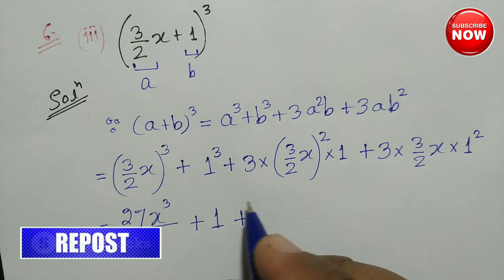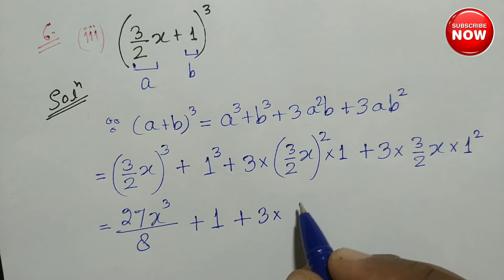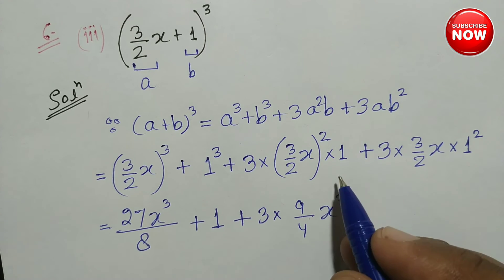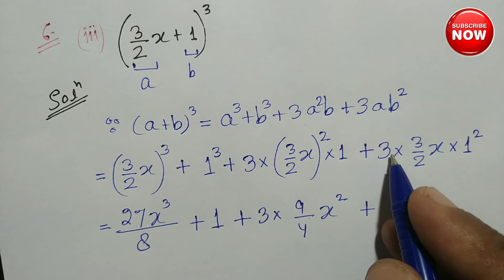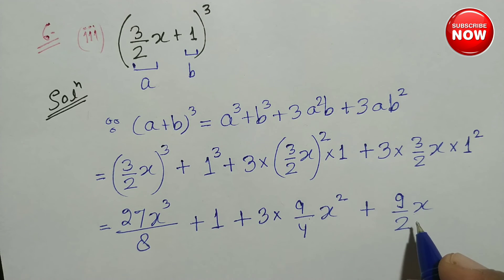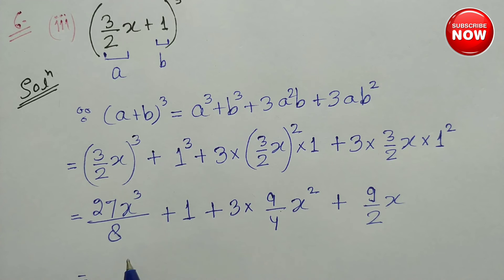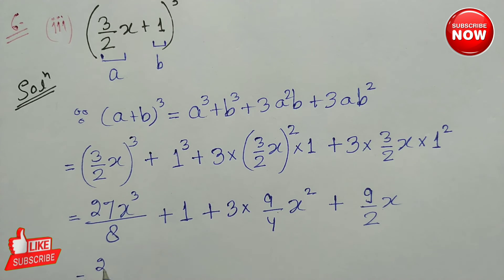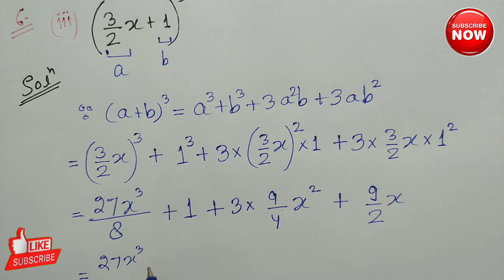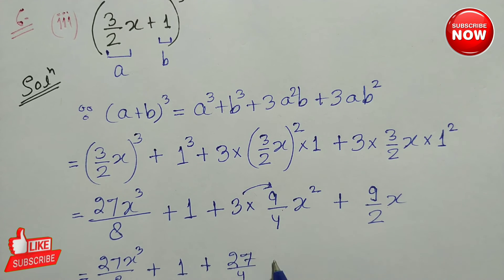1 का cube 1 ही रहेगा। 3 into (3/2x) whole square: (3/2x)² = 9/4 x square, 1 से multiply करने पर यही रहेगा। 3 की 9 से multiply होगी: 3 × 9 = 27 upon 4 x square. और 3ab square: 3 × (3/2x) × 1² = 9/2x. तो 27x cube upon 8 plus 1 plus 27 upon 4 x square plus 9 upon 2 x.